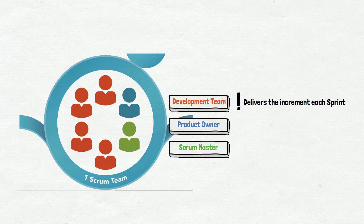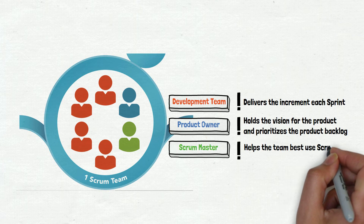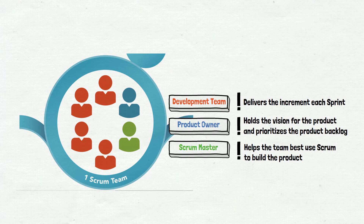The blue icon is the product owner, a person with two main responsibilities: holding the vision for the product and prioritizing the product backlog. The naming can confuse, but mostly this is not like a boss — it's more like a business analysis role. It is the person who knows everything about the product, customers, priorities, and vision. The last role in the Scrum team is the Scrum master, who helps the team best use Scrum to build a product. The main responsibilities are to ensure the team follows agile values and principles and adheres to Scrum processes and practices.